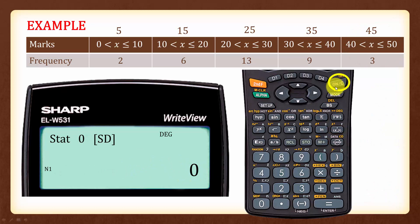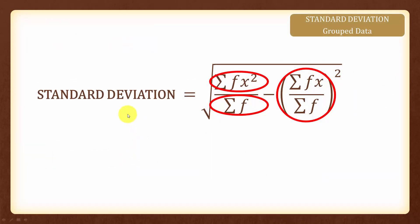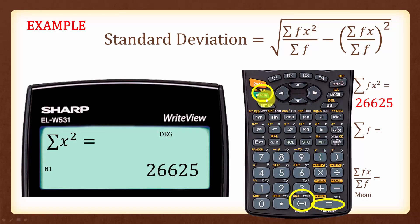Press the On or Cancel button to return to the main screen. To recall, the standard deviation is given by the formula shown. We will use the calculator to find the summation of fx squared, the summation of f, and the mean. To find the summation of fx squared, press Alpha, followed by the negative button, then Equal, to get 26,625.